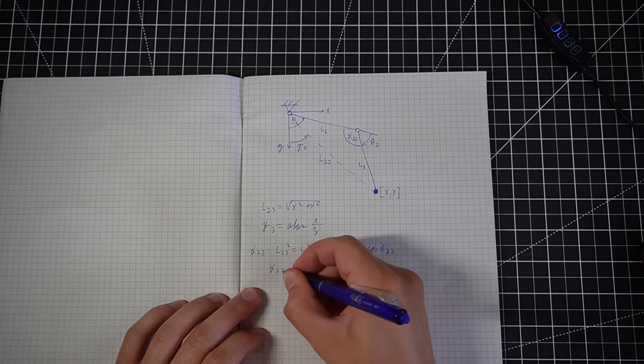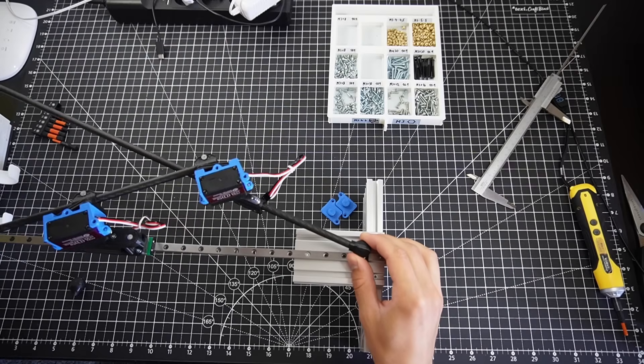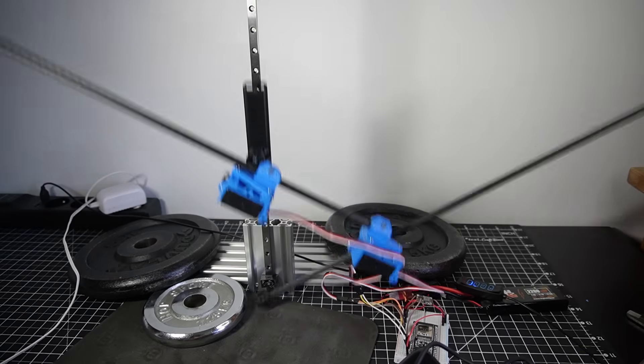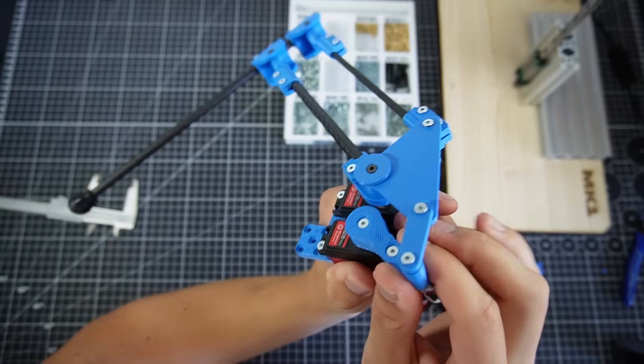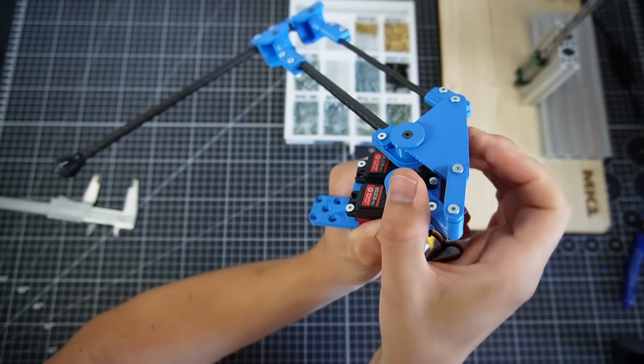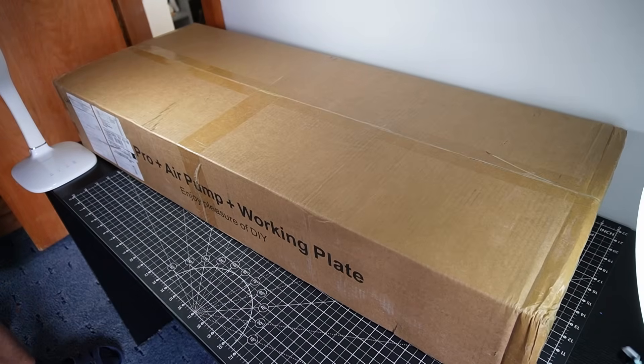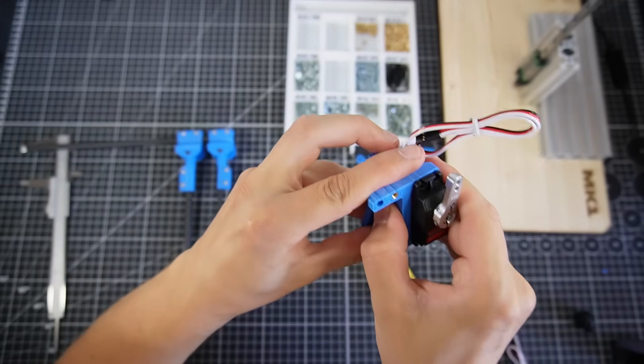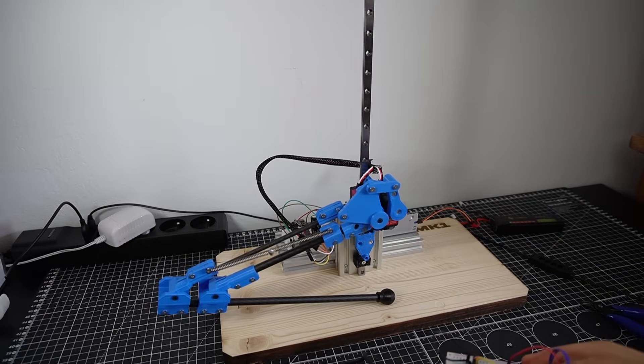Last video I made a shitty prototype of the robot's leg. It was really bad, shaking like crazy and wasn't even able to jump. This time there's gonna be a lot happening. I'm getting my first CNC, I'm gonna scrap the old design and make a new leg with a different mechanism.